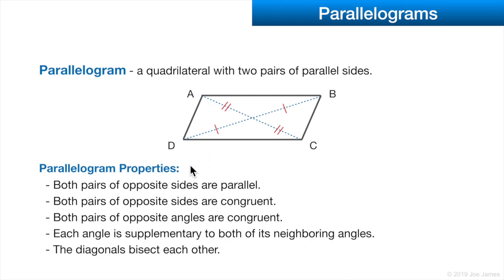Some properties all parallelograms have: both pairs of opposite sides are parallel by definition, and both pairs of opposite sides are congruent. Both pairs of opposite angles are congruent, so B and D are the same measure, and A and C are the same measure. Each angle is supplementary to both of its neighboring angles — they add up to 180 degrees. So B and C add up to 180, C and D add up to 180, and A and D add up to 180.